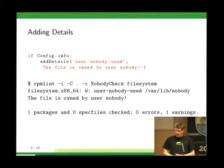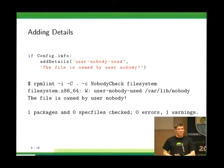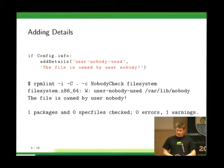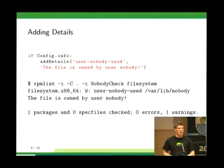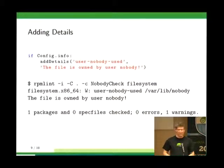To run your test, you call RPM-Lint with -I to display the information added with details, -C for the config from the current directory, -c for the specific check to run, and finally the RPM. Here we check the filesystem RPM because we know it has a directory owned by nobody. The test works — it prints a warning that /var/nobody is owned by nobody. Quite simple.